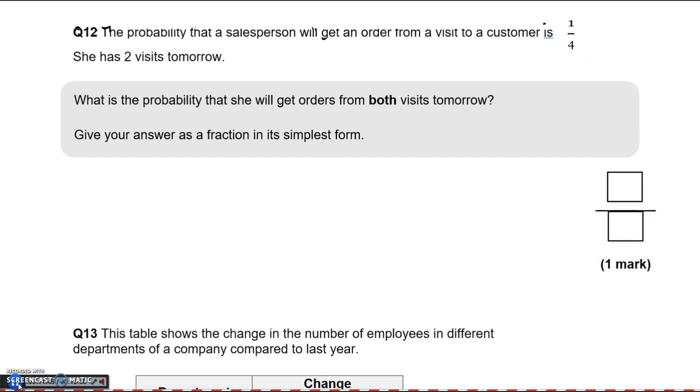Question 12: The probability that a salesperson will get an order from a visit to a customer is 1 quarter. She has two visits tomorrow. What's the probability that she will get orders from both visits? Give your answer as a fraction in simplest form. So there's the first visit. You could get an order or not an order. To get an order, the probability is 1 quarter. To not get it is 3 quarters. Then the second visit, same thing. Order or not order, 1 quarter and 3 quarters for each branch.